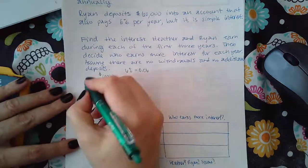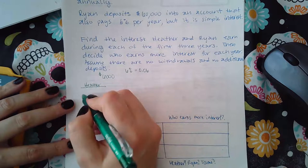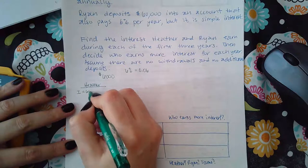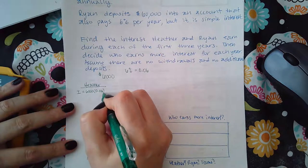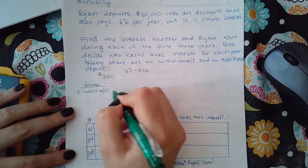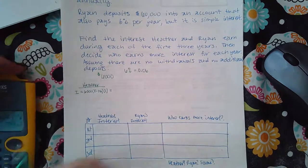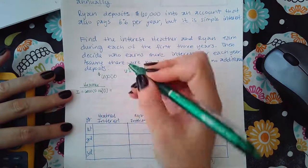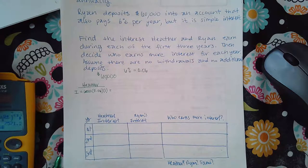So for Heather in year one, how do you calculate her interest? Her interest is going to be calculated by $6,000 times 0.06 times one year, which is going to give her... it's not supposed to be $6,000, supposed to be $60,000. So $60,000 times 0.06 times one is $3,600.